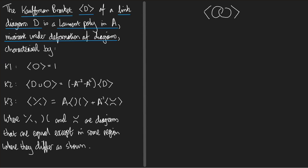K1 tells us that the Kauffman Bracket of the unknot is 1. In K1, this symbol is not the unknot — it's the diagram of the unknot. K2 tells us that if I take a diagram and take its disjoint union with the standard diagram of the unknot — when I say disjoint union, I mean you draw a line in your plane, your D is on one side of it, your unknot is on the other — then the Kauffman Bracket of that is just the Kauffman Bracket times minus A to the minus two minus A squared.